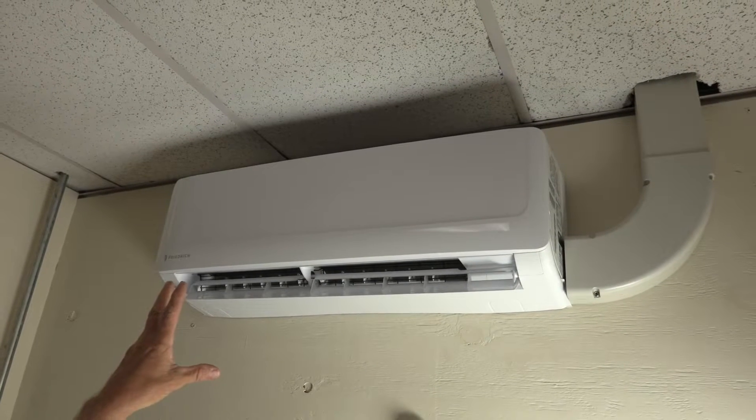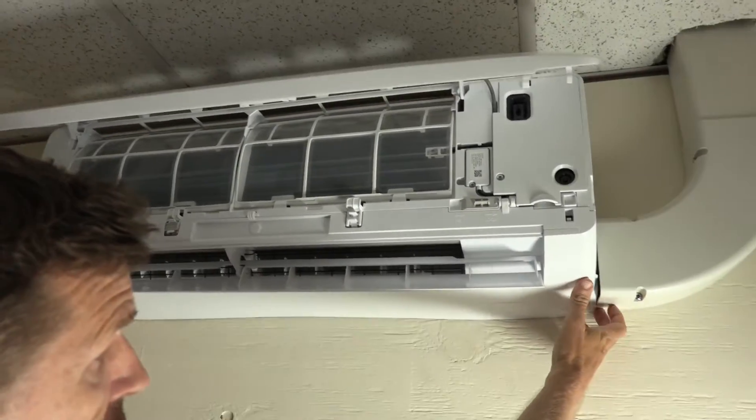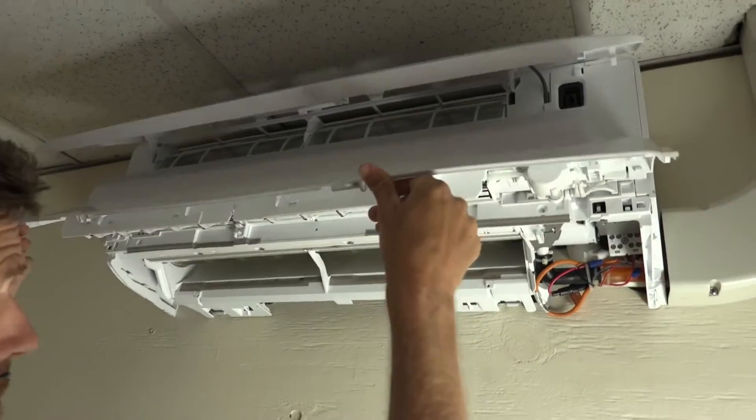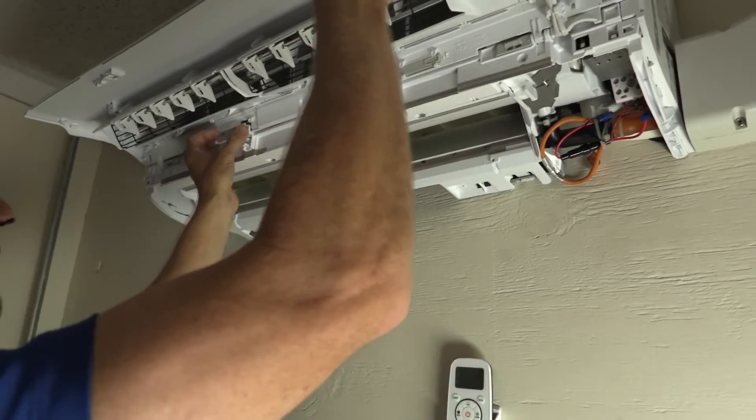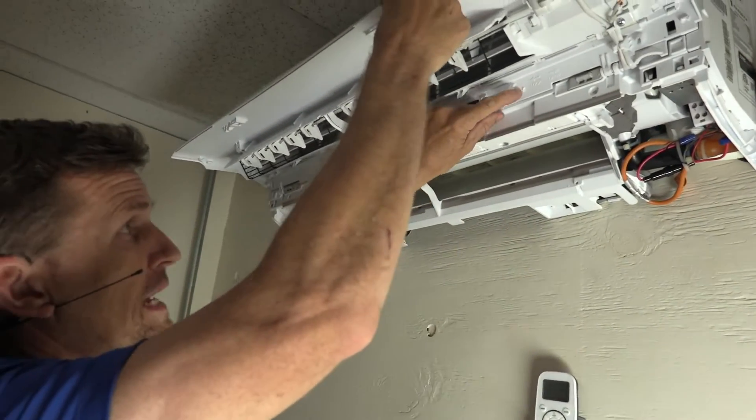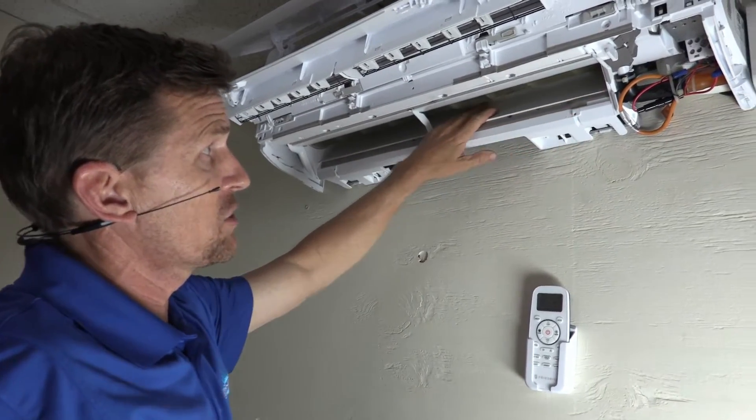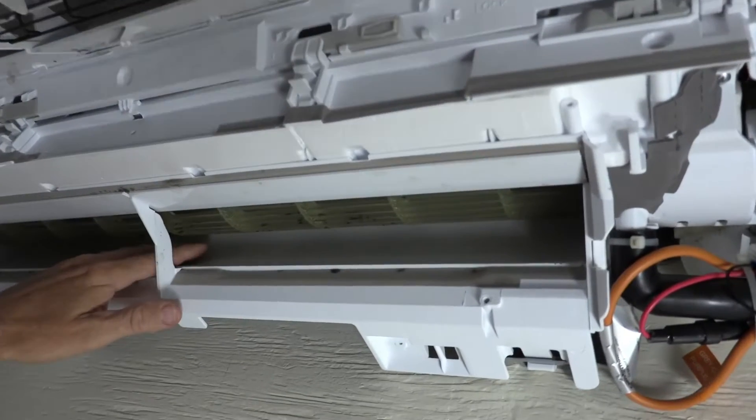This is the ductless mini split we're going to be installing the mini LED into. All you do is once you take two screws out, you just flip it up and lock it in place so you can actually have access to the blower. No matter what the brand is, you want to always have access to the shroud and the blower wheel because the strip is going to go directly into this area.